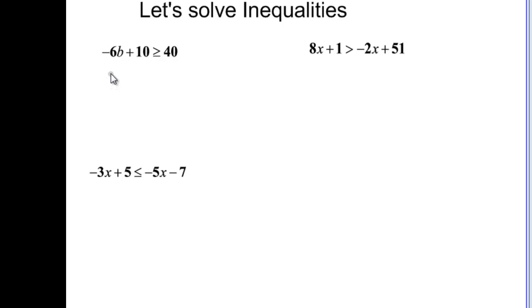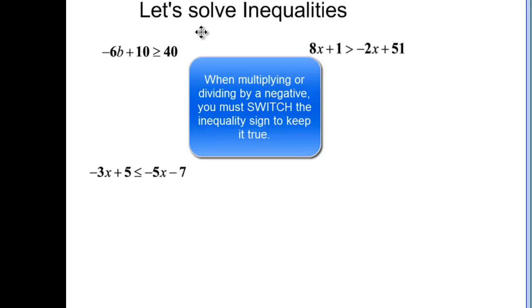This first example, what we're going to remember is that when we multiply or divide by a negative number then we have to switch the inequality. To solve this one I'm going to subtract 10 from both sides so negative 6b is going to be greater than or equal to 30. Now I'm okay so far, I don't have to switch the inequality until I do this next step. When I divide by negative 6 then I have to watch my inequality and I'm going to move it right away so that I don't forget.